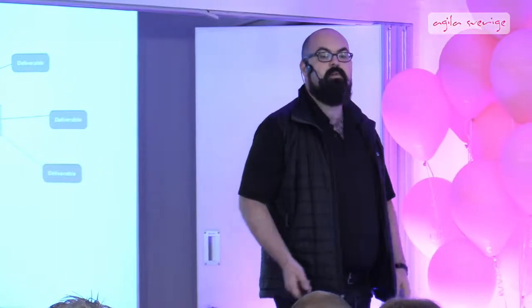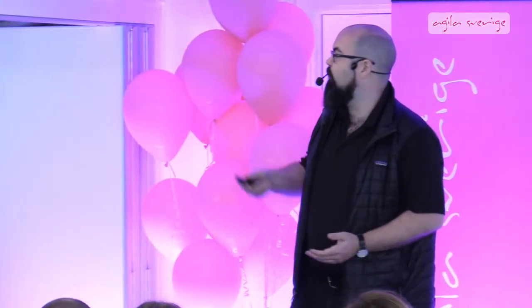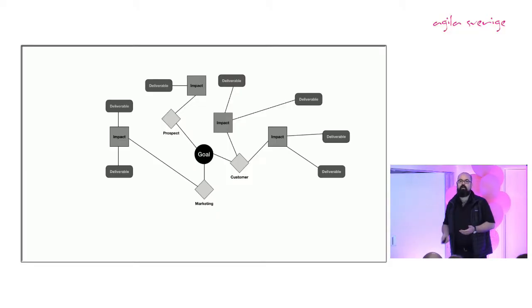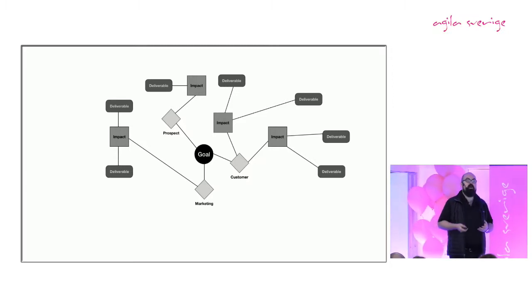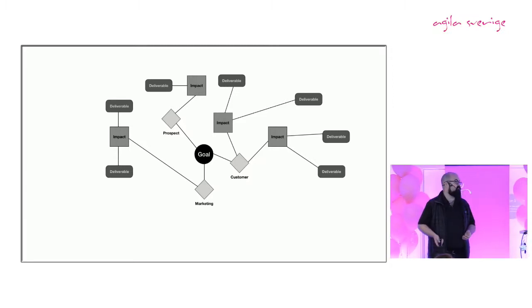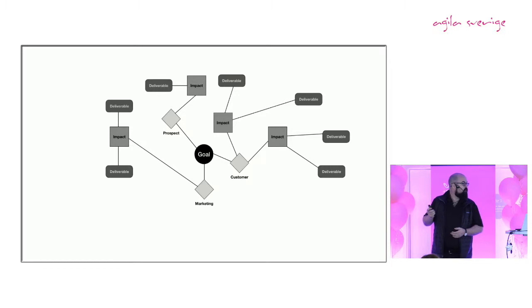And then on the outside of that, all of those things are your deliverables. And this is where in a lot of cases you'll take an existing backlog, you'll run it through an impact map, and you'll take all of those deliverables that are in your backlog and you'll try and connect them to an impact, to an actor, to a goal. And then you can have the conversations with the stakeholders around, well okay, does this add value? Is this driving your goal forward? Is this going to help achieve the things you're trying to achieve or is it not?